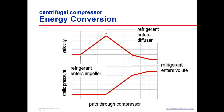This reduction in kinetic energy is offset by an increase in the refrigerant's static energy or static pressure. The high-pressure refrigerant collects in the volute around the perimeter of the compressor, where further energy conversion takes place. The resulting pressure and temperature of the refrigerant is now high enough that its heat can be rejected from the chiller.